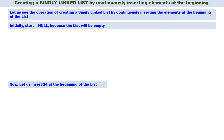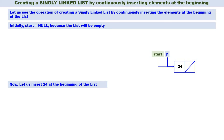Let us insert 24 at the beginning of the linked list. Right now there is no linked list. At the beginning means we have to create a new node, which is pointed by P. P of info is equal to 24. The info part of P is 24 and the address part of P should become equal to null. We have created a node with 24 and start should contain the address of this node. So we have inserted 24 at the beginning of the list.